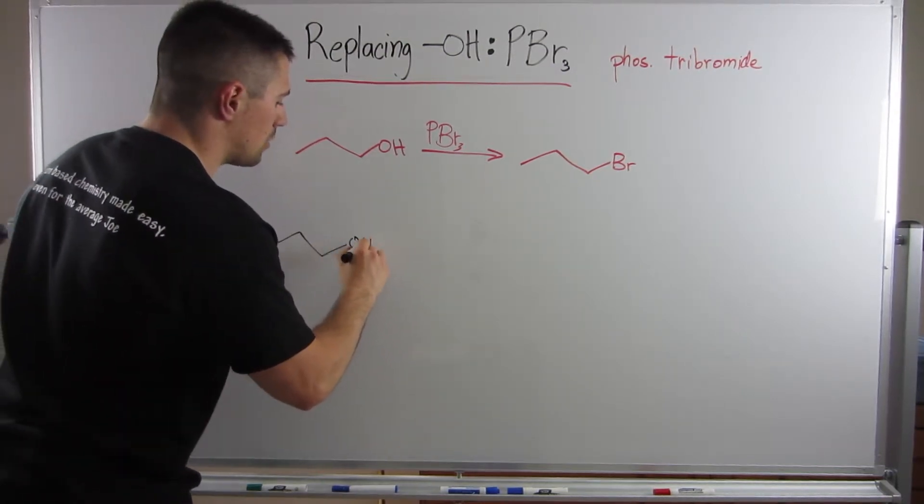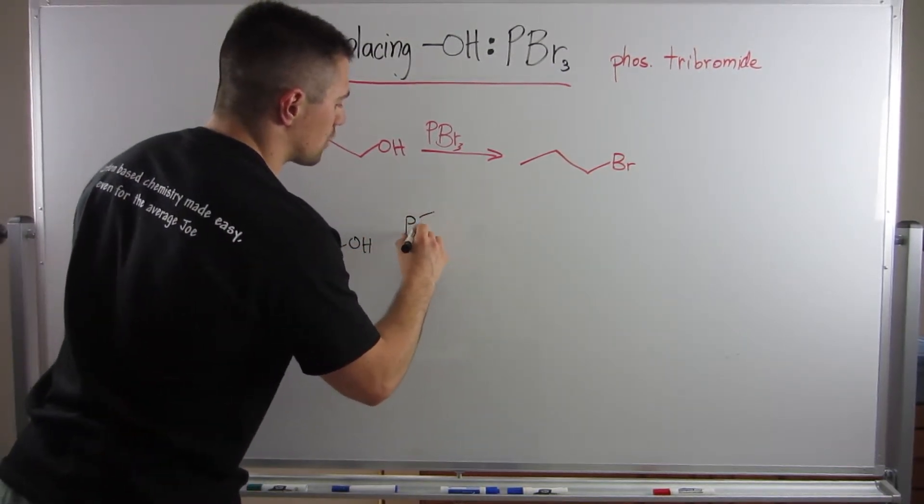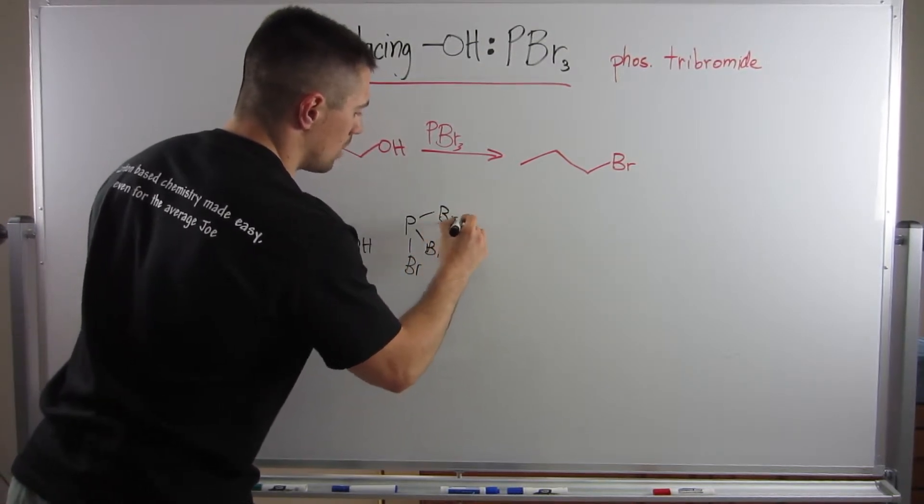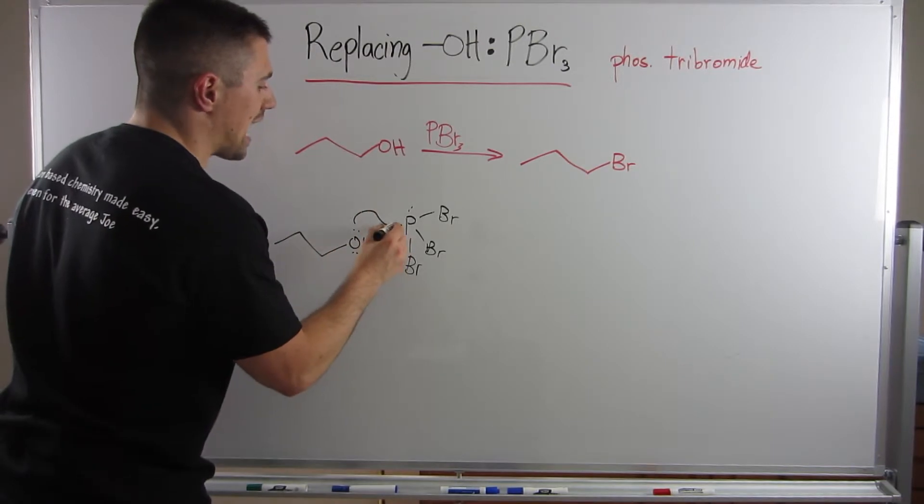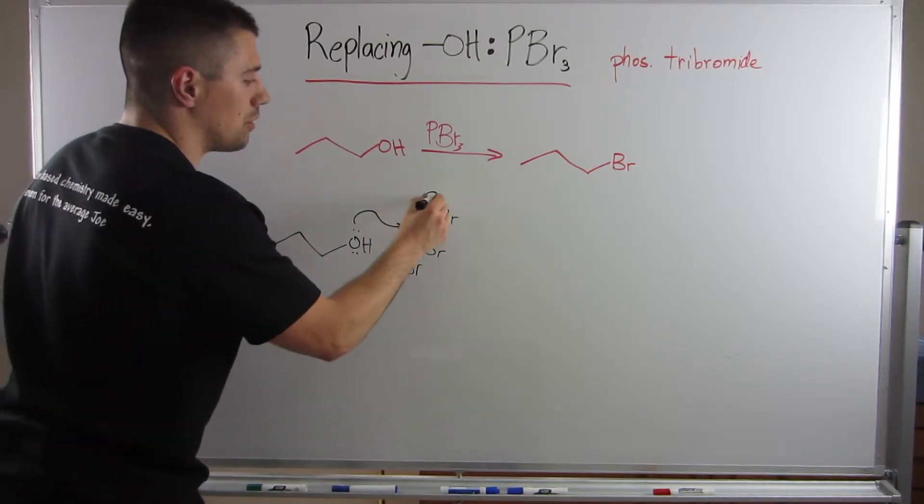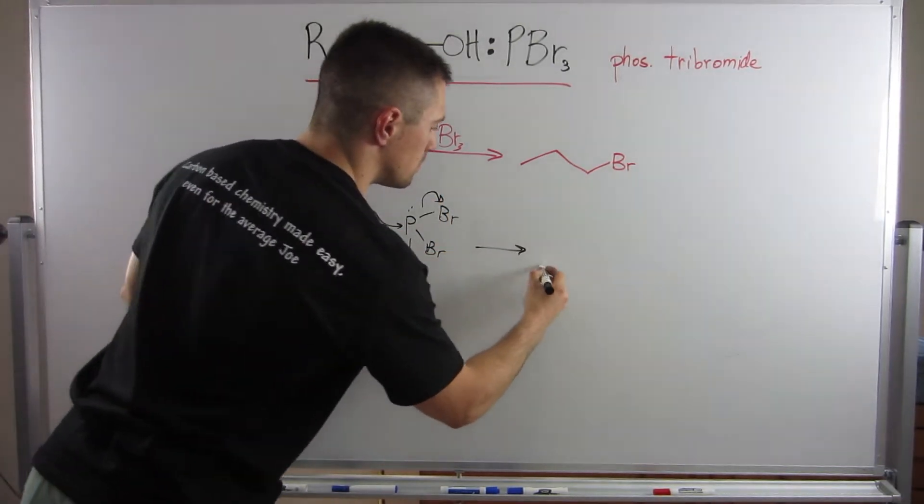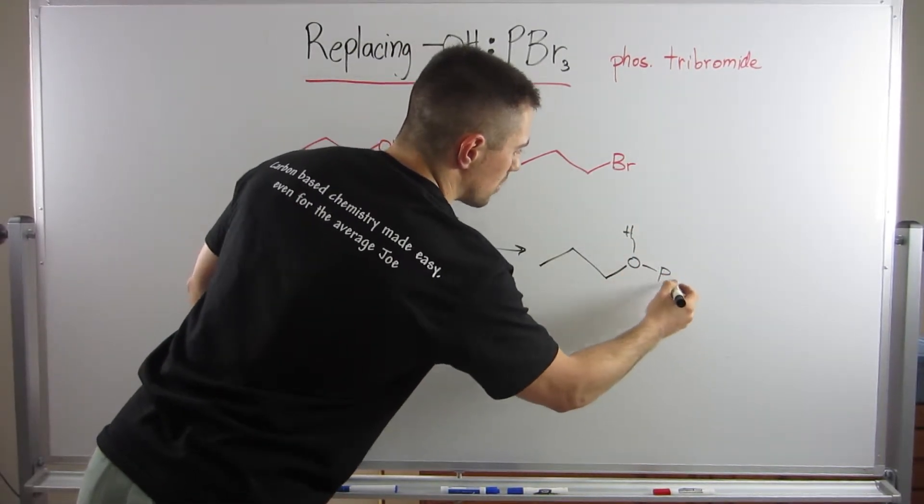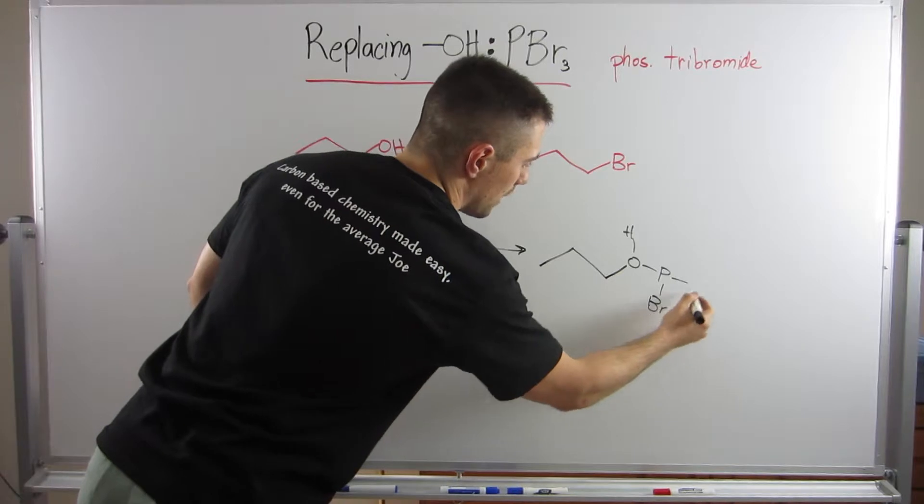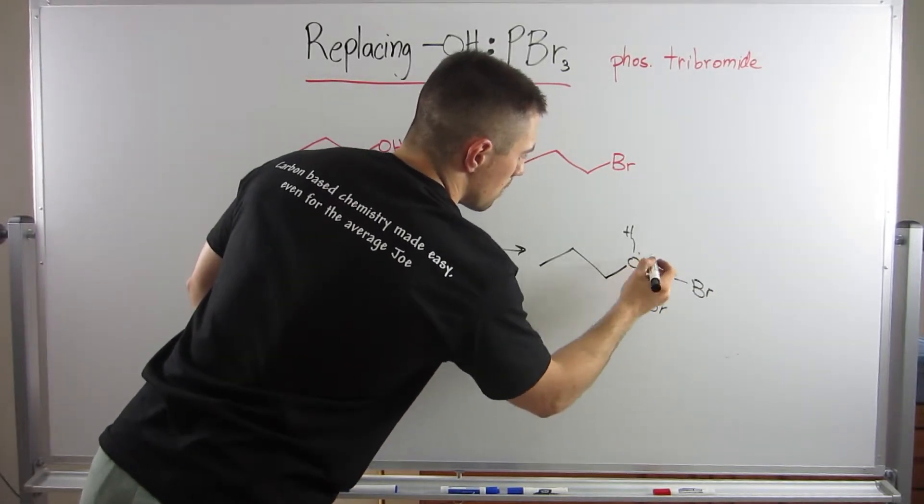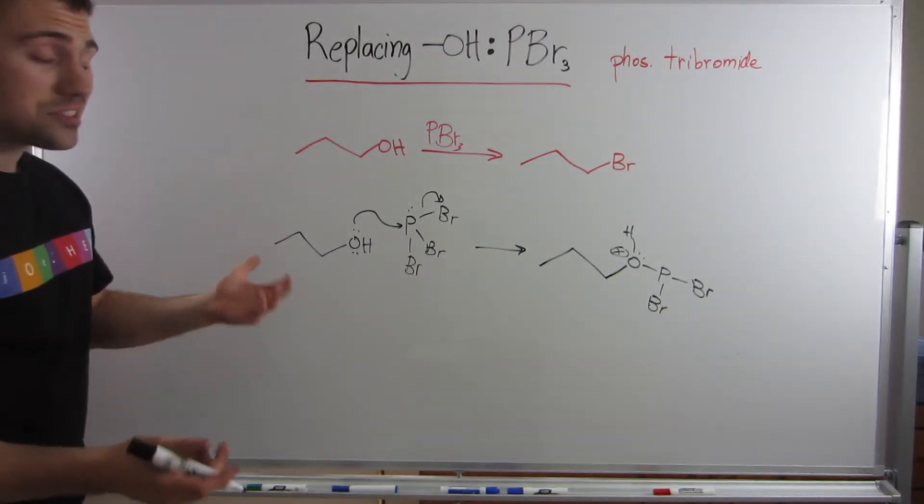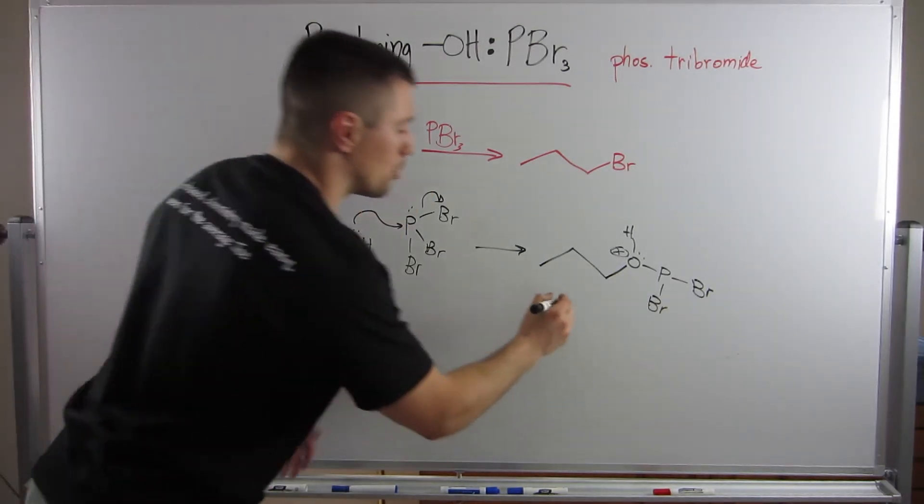Okay, so what we got going on here is, again, phosphorus attached to three atoms more electronegative than itself. So your first step here is oxygen is going to attack the phosphorus, and we're going to boot one of the bromines. By doing so, oxygen is donating an electron pair. So its formal charge is now positive. He was neutral, now it's positive.